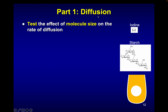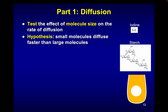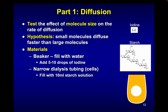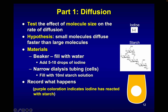This first experiment looks at diffusion — this is the starch and iodine experiment where you take a baggie of starch solution with iodine on the outside. We're testing the effect of molecule size on the rate of diffusion. The hypothesis is that small molecules diffuse faster than large molecules. Iodine is a very small molecule — literally two atoms attached to each other — whereas starch is a very large molecule.